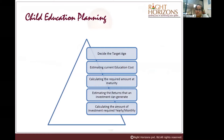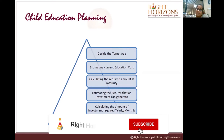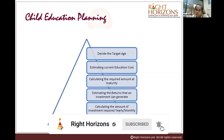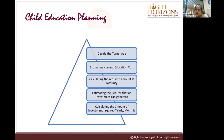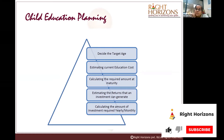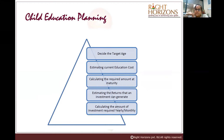What all comes under kids education planning? First, you decide the target and estimate the cost — that's very important. It depends on the college, the course, and many other things. For engineering in India, it normally costs around 25 to 30 lakhs. For medical, if you get into a good college with good marks and ranking, it may not cost much, but otherwise it can be between 50 lakhs to one crore.